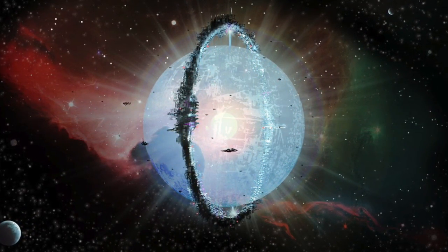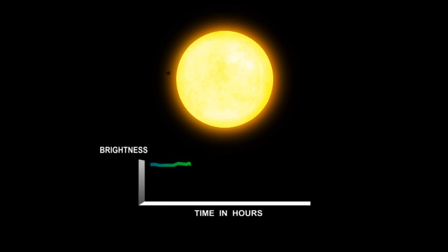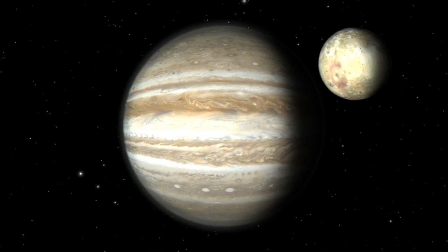When exoplanets transit their star in the Kepler data, they do it like clockwork. As they orbit their star, they come back around and block the light periodically, just like you would see earth pass by every 365 days if you were sitting in space looking at the sun from a stationary vantage point. This gives scientists the orbital period for exoplanets, and the depth of the dip reveals the exoplanet's size. This is all very reliable for a normal star system, though some small anomalies can occur when planets tug on each other under certain circumstances.